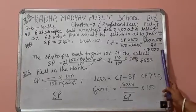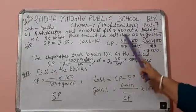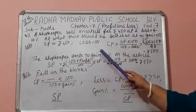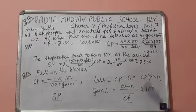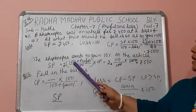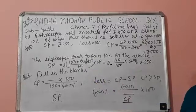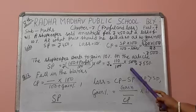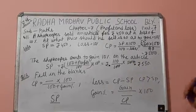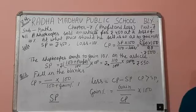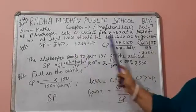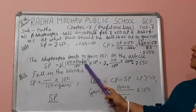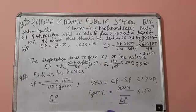That means 500 is the actual CP. Now the shopkeeper wants to gain 10%, so SP is equal to (100 plus profit percent) divided by 100, multiplied by CP. That equals 110 multiplied by 500 divided by 100, which equals 550. When there is a loss, it is 100 minus loss percent in the denominator. When there is a profit, 100 plus profit percent is used.